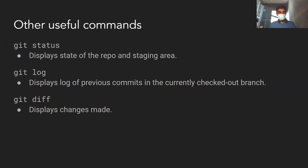There are some other generally useful commands. Git status displays the state of the repository and the staging area. Git log displays a log of previous commits in the currently checked-out branch — think of it as a log of all the previous commits you've made. And git diff displays the changes you've made. Just running git diff will show you using green or red what changes you've made since the last commit. You can also specify two commit hashes to see the changes between two specific commits.